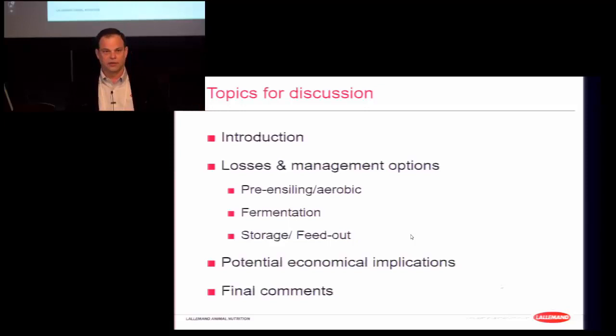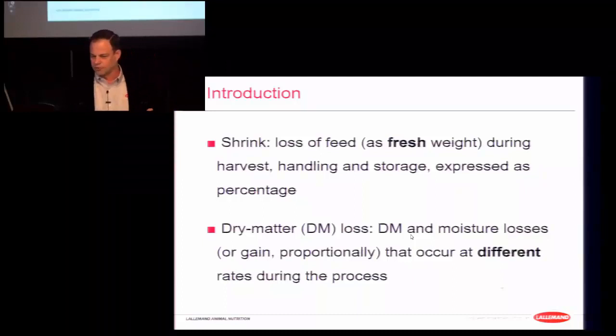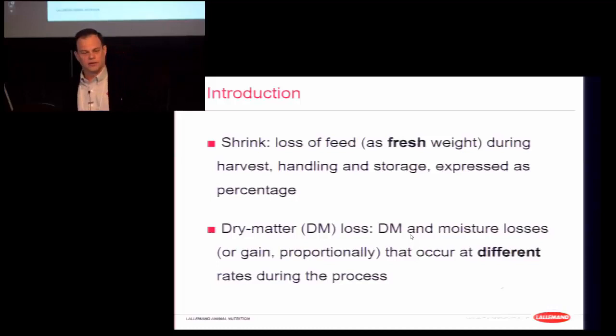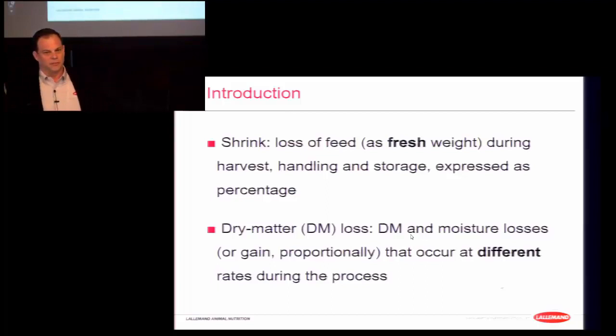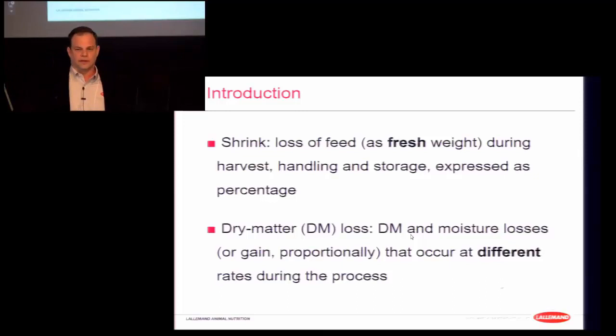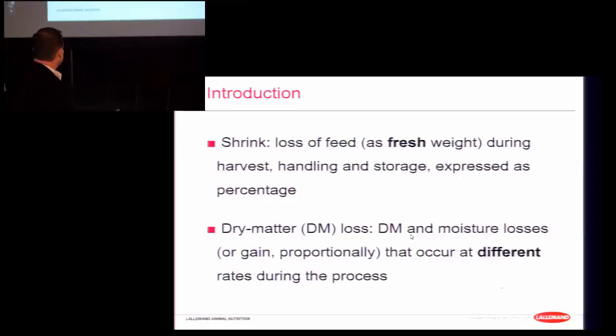Just to go over some concepts and names: some people use 'shrink' or 'shrinkage' or 'dry matter losses.' Shrink is the loss of feed as fresh weight during harvest, handling, and storage expressed as a percentage — for example, feed being blown out of the truck or wagon during handling. Dry matter losses refer to dry matter and moisture losses, or moisture gain proportionally, that occur at different rates during the process.